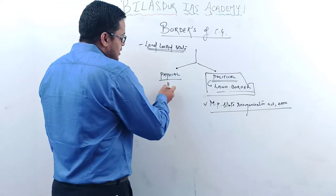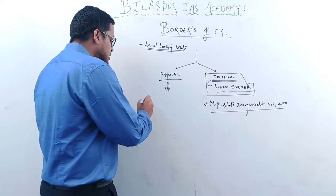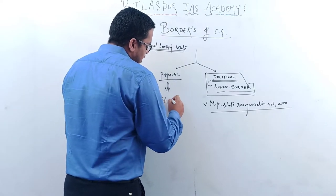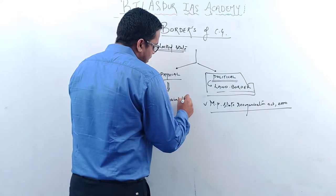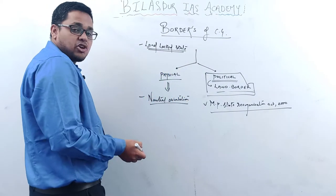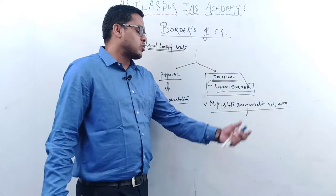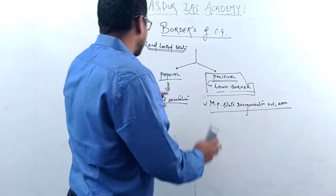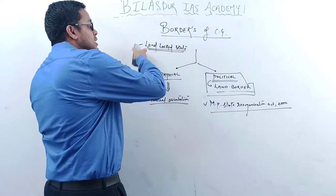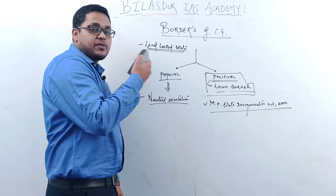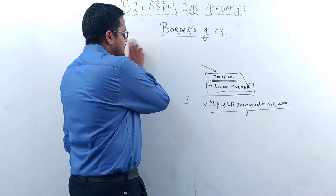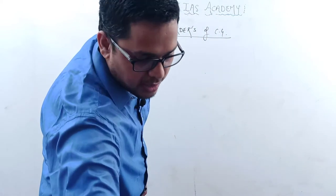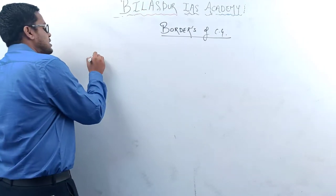The physical border has a natural orientation. So we have two types: the physical border due to natural features, and the political border from the MP State Reorganization Act 2000. Please remember Chhattisgarh is a landlocked state — it does not have any coastal border. First we will look into the political borders, then we'll move towards the physical borders.